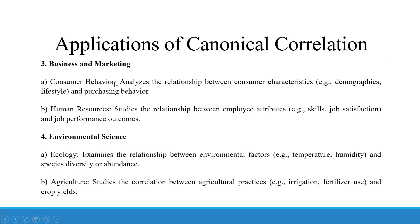In business and marketing, it analyzes the relationship between consumer characteristics like demographics, lifestyle, and purchasing behavior. In human resources, it studies the relationship between employee attributes — skills and job satisfaction — and job performance outcomes. In environmental science and ecology, it examines the relationship between environmental factors such as temperature and humidity and species diversity or abundance. In agriculture, it studies the relationship between agricultural practices such as irrigation and fertilizer use and crop yields.